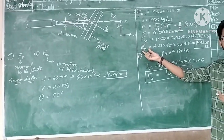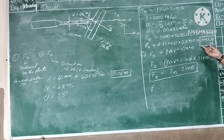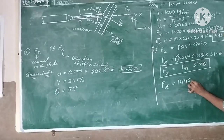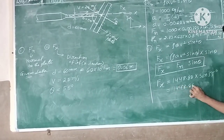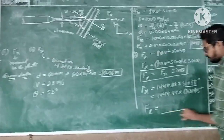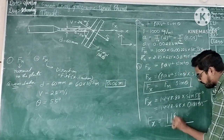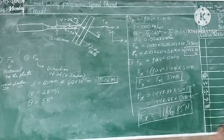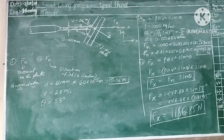Now we have Fn = 1448.88 N, the force exerted by the jet in the direction normal to the plate. To find Fx, we use Fx = Fn × sinθ = 1448.88 × sin55° = 1448.88 × 0.8191 ≈ 1186.85 N. Therefore, the force in the direction normal to the plate is 1448.88 N and the force in the direction of the jet is 1186.85 N.